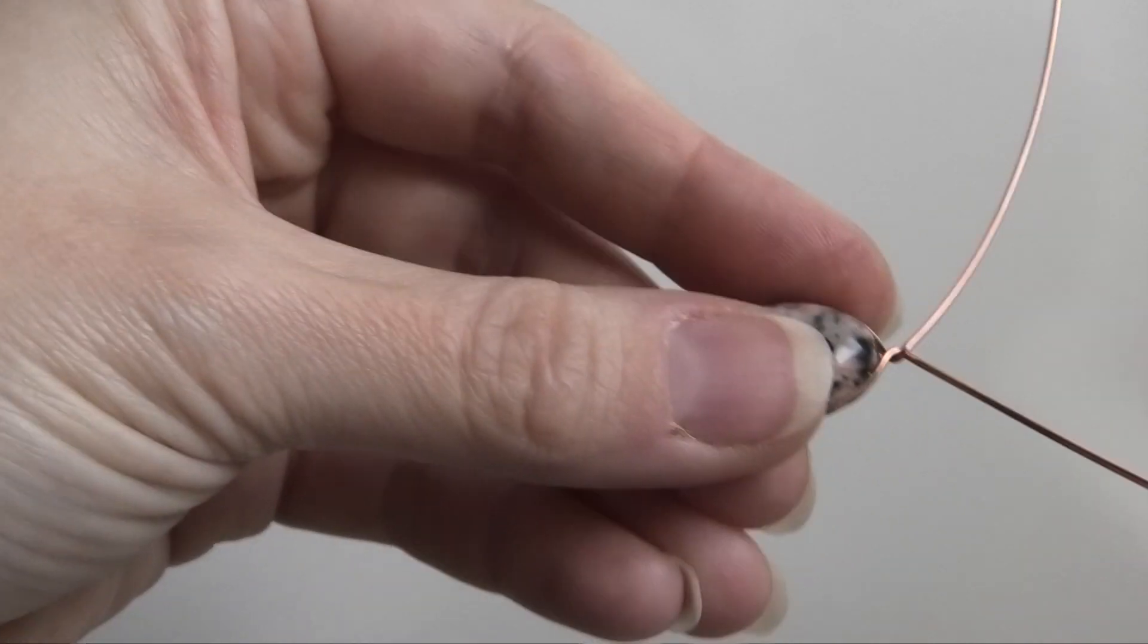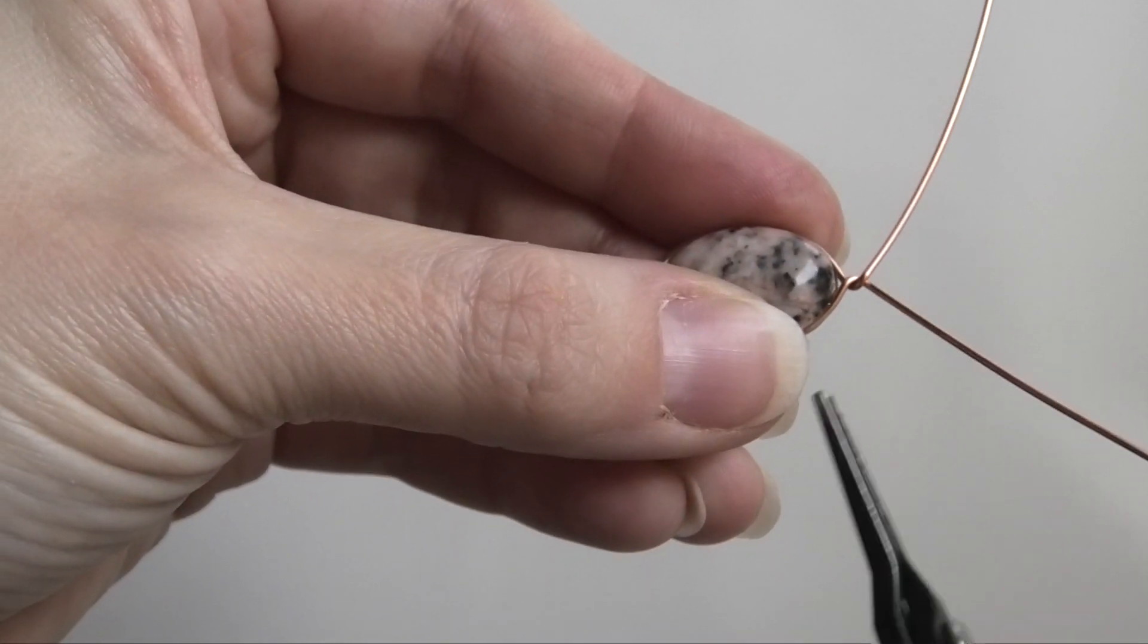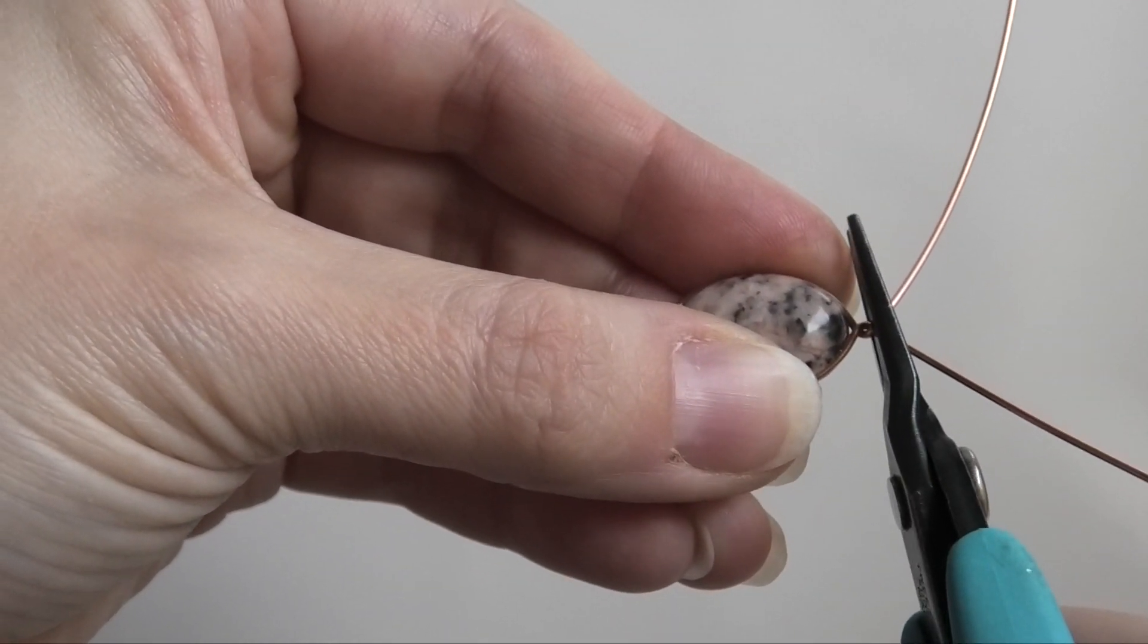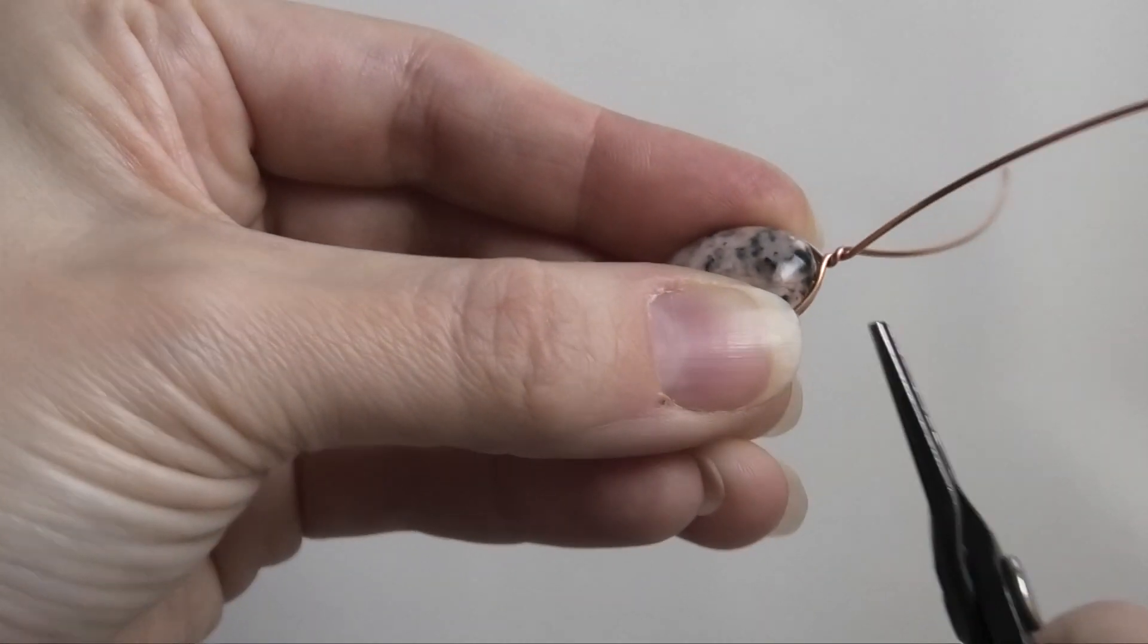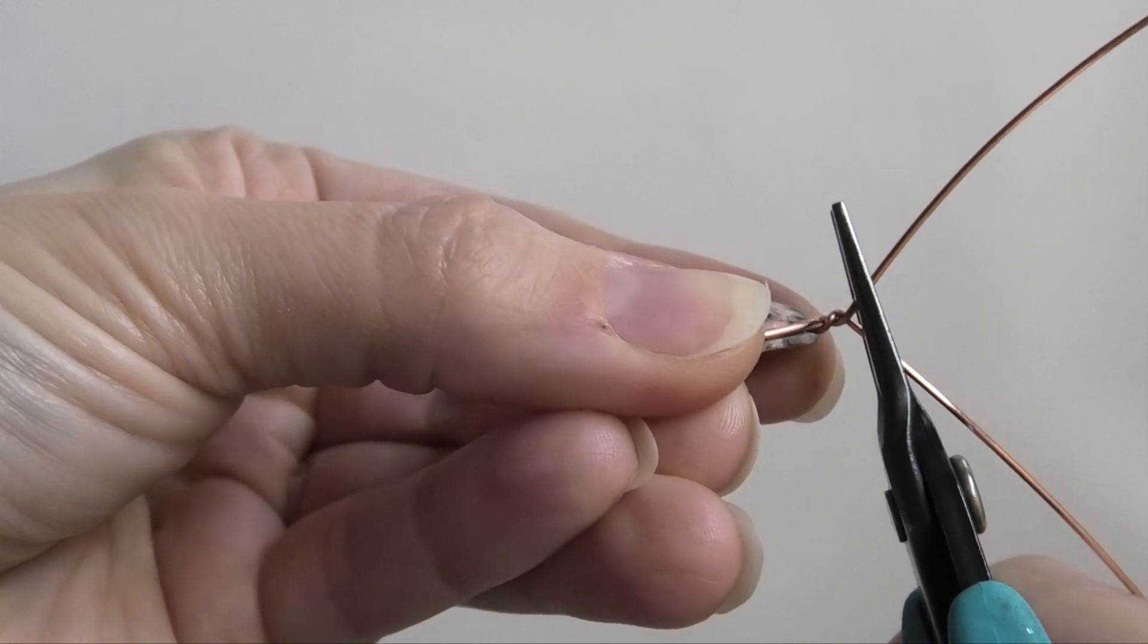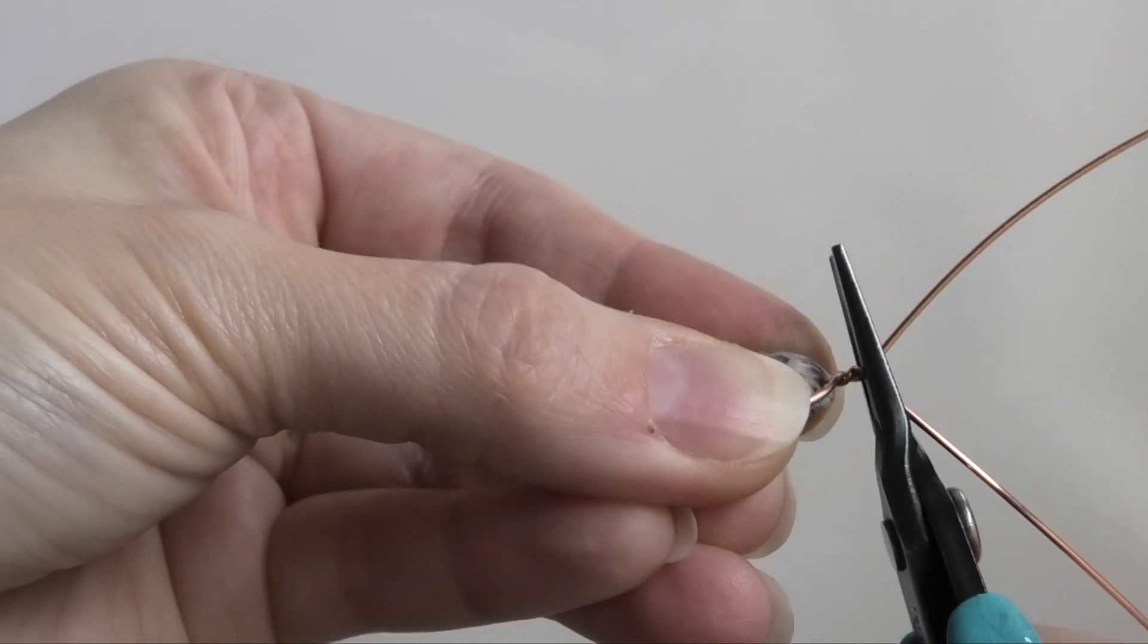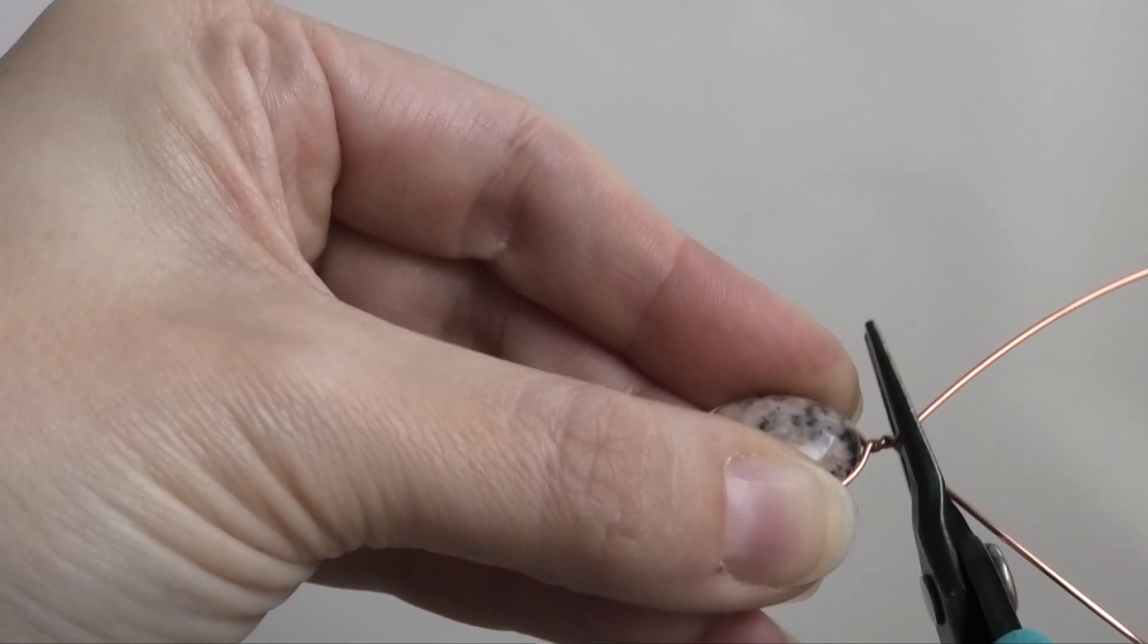But if your stone doesn't feel too secure, you can tighten the twist up. Just be careful with your pliers, because if you twist really hard or press down on it really hard, the wires can actually snap.